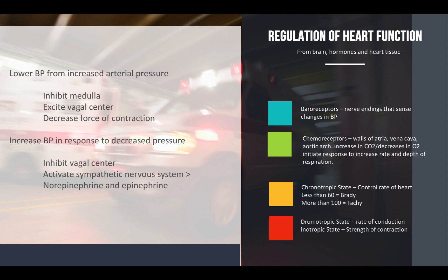It also affects an increase in blood pressure in response to a decrease in arterial pressure. This inhibits your vagal center and activates your sympathetic nervous system and, of course, norepinephrine and epinephrine. We're also talking about things like chemoreceptors — these are located in the walls of the heart, the atria of the heart, the vena cava, the aortic arch, the carotid sinus. This senses an increase in CO2 or decrease in O2, and then initiates that sympathetic response to increase the rate and depth of respiration.